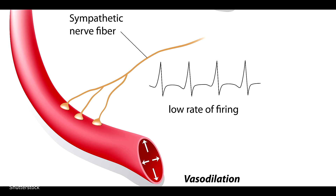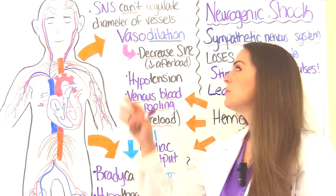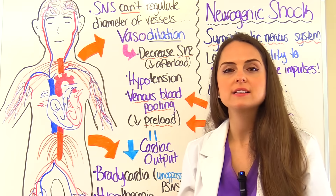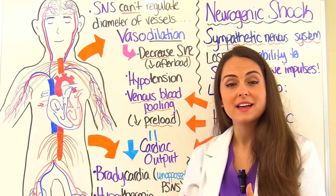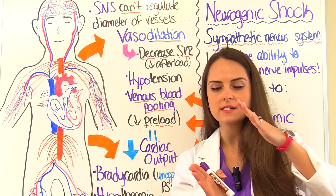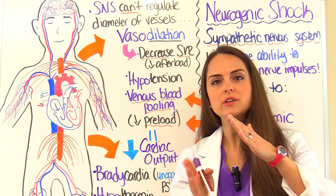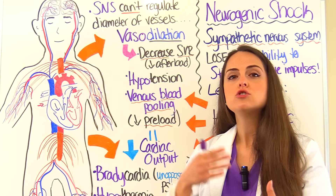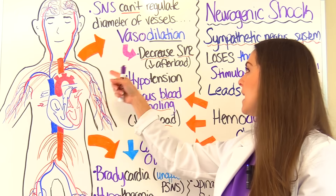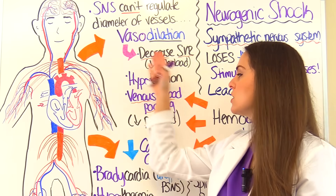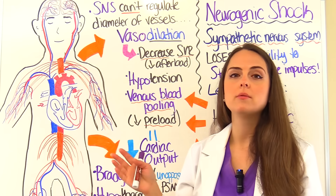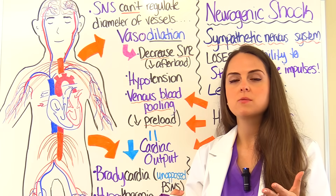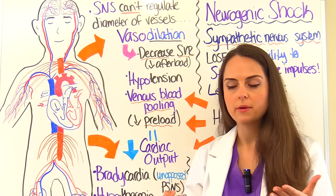With this major vasodilation, this is going to affect the resistance in our vessels. If our vessel is nice and open and relaxed, that's going to decrease the resistance inside of it. So we're going to have a decrease in our systemic vascular resistance, which is going to cause problems and affect our cardiac output.